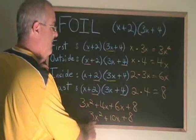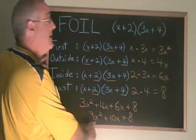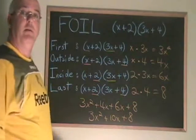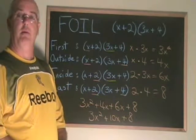Our answer is 3x squared plus 10x plus 8. Use the FOIL whenever you are multiplying two binomials.